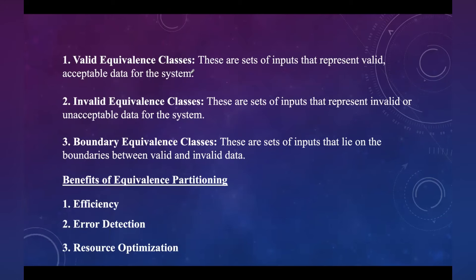A valid equivalence class is a set of inputs that represent valid or acceptable data for the system. For example, if a function accepts numbers between 1 and 100, valid classes might include numbers like 10, 50, and 99. An invalid equivalence class contains inputs representing invalid or unacceptable data — for the same function, numbers less than 1 or non-numeric values are invalid. Boundary equivalence classes are inputs that lie on the boundaries between valid and invalid data.